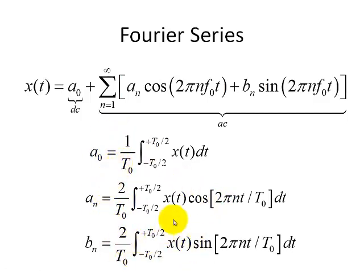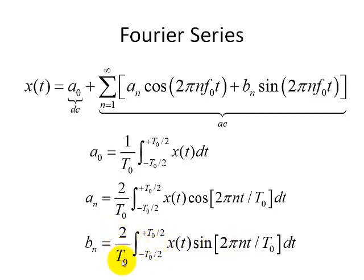I'm not going to derive these equations — I'll do that in a later video. For Bn, we multiply x(t) by the sine functions to see how similar x(t) is to a sine at the fundamental and harmonic frequencies, and integrate over one period. 2 over T0 is the normalizing factor. This gives us the basic equations for calculating the coefficients a0, An, and Bn — our recipe for forming a periodic signal.